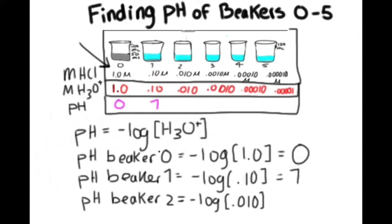This is why we originally named our beakers zero through five instead of one through six, because now the pH matches our beaker numbers.